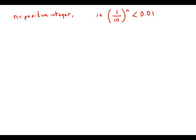If n is a positive integer, is (1/10)^n less than 0.01? Let's think about this for a minute.